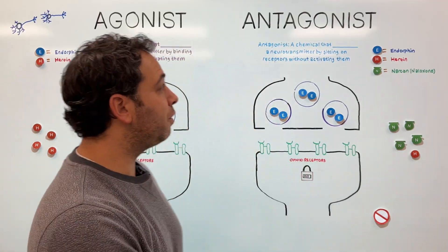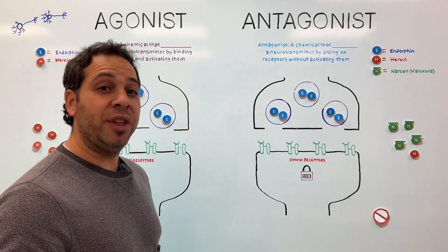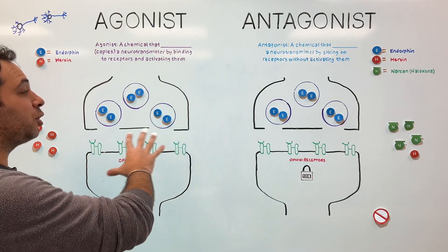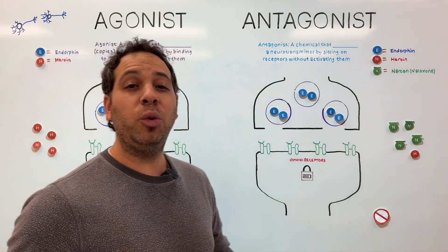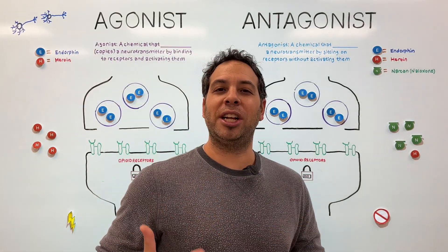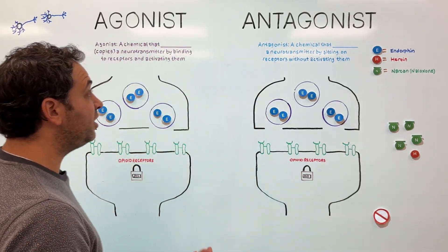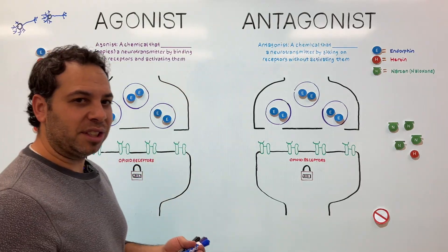Now before I go over these processes, we've got to understand two things. One is what are the structures and parts behind us? And two, how do neurons communicate? This is going to lay the foundation for understanding the difference.